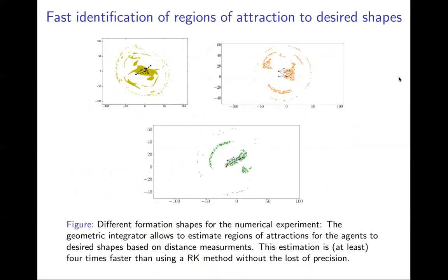A desired configuration is a collection of fixed configurations whose SE(2) transformations define the desired shape. Two configurations are congruent if the distance between agents in both configurations is the same. If two configurations are congruent, they define the same shape, up to translations and rotations.